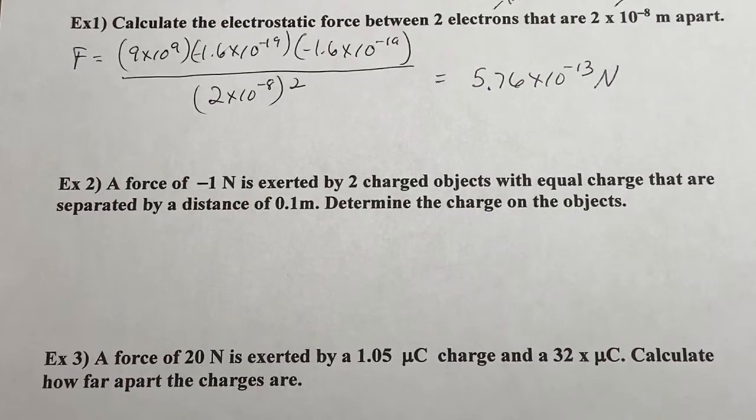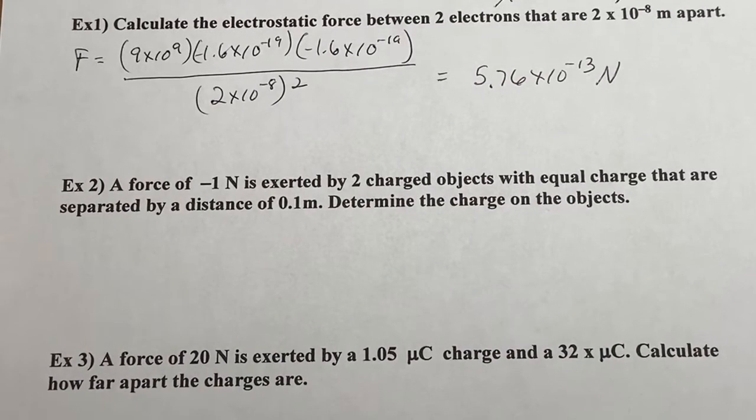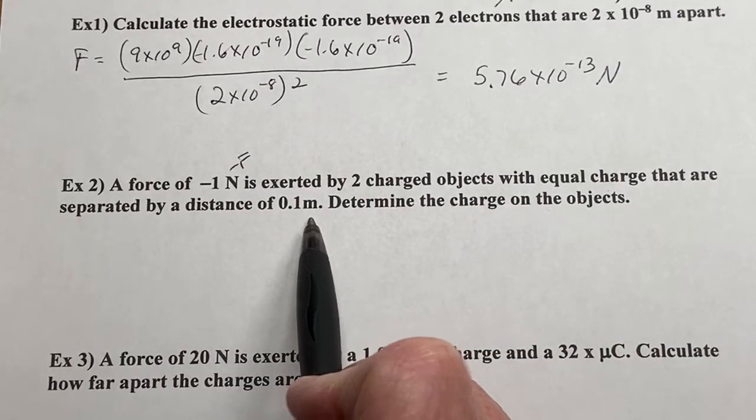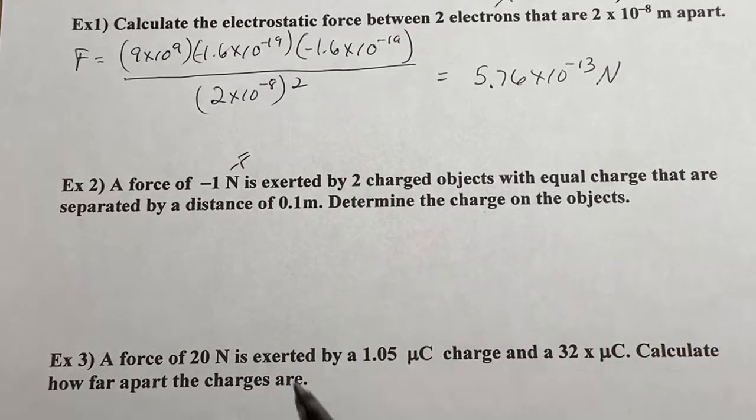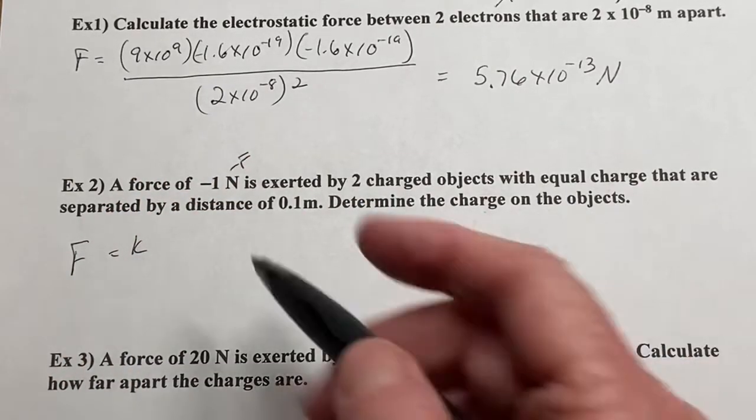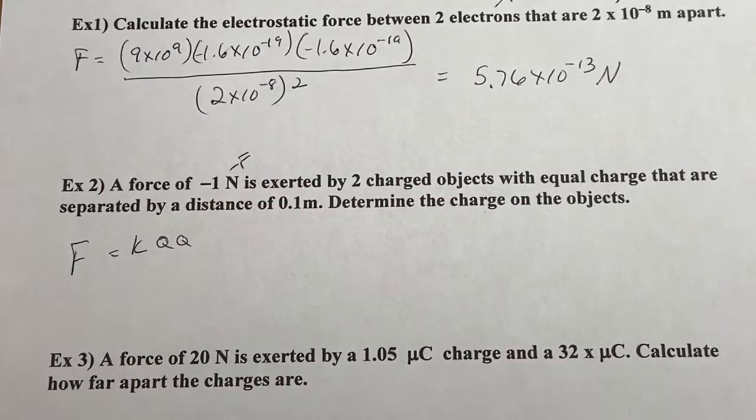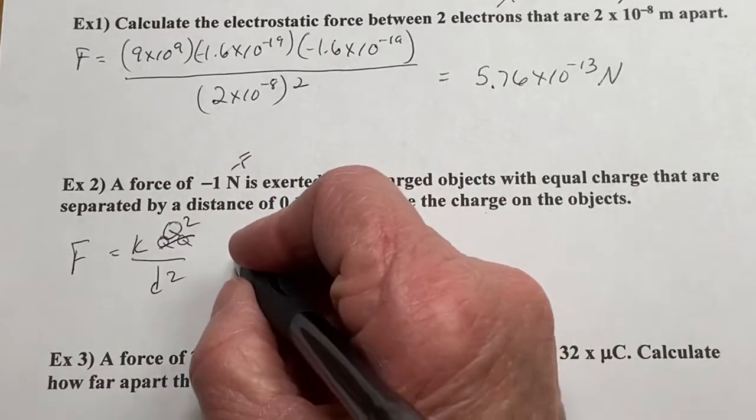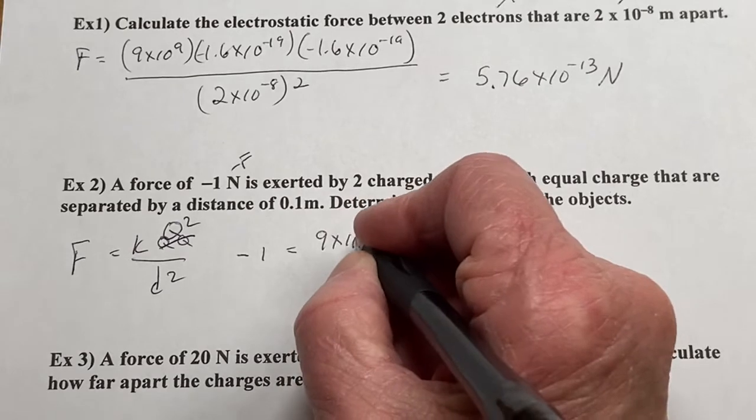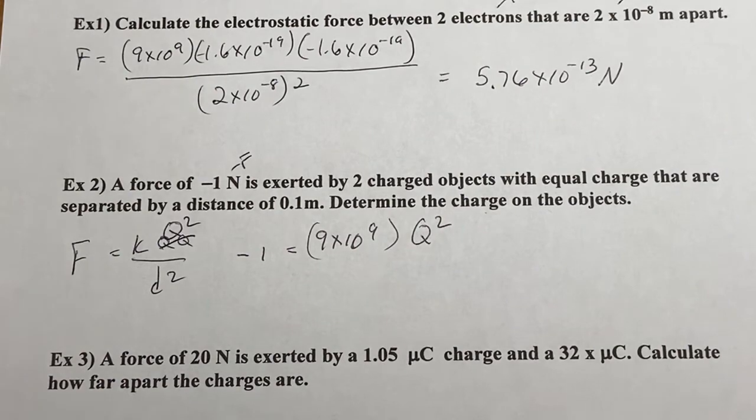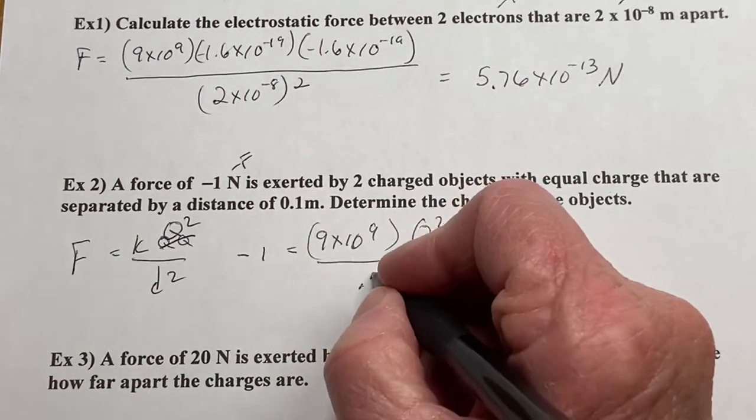Alright, so the next one. A force of negative 1 Newton. So here's the force. I have two charge objects with equal charge. So basically, it's a Q and a Q, and they're separated by 0.1 meter to determine the charge on the objects. Okay, so F equals K. And in this case, since they're equal charges, I'm just going to call them the same Q, which we know the same as Q squared over D squared. So let's substitute. Negative 1 equals 9 times 10 to the 9th Q squared. I don't care if you use capital Q or lower Q. It doesn't really matter. Over 0.1 squared.